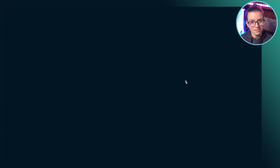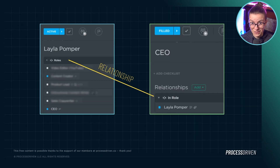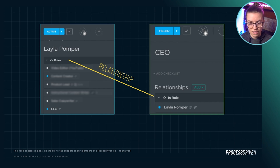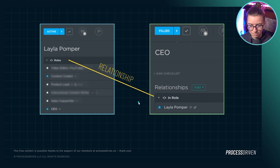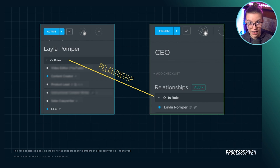Looking at this in ClickUp, you can see that we have Layla Pomper on the left and CEO on the right. This relationship shows underneath the task description, below the checklist or subtasks, under the aptly named header of "relationships." Over on the CEO side, we've named this side of the relationship "who's in the role," and on the other side we just call it "the roles that the person's in." This link between the two is a relationship — I could click Add, browse all the different roles, and connect those two things together without retyping information. It's like a two-way hyperlink between two different tasks.